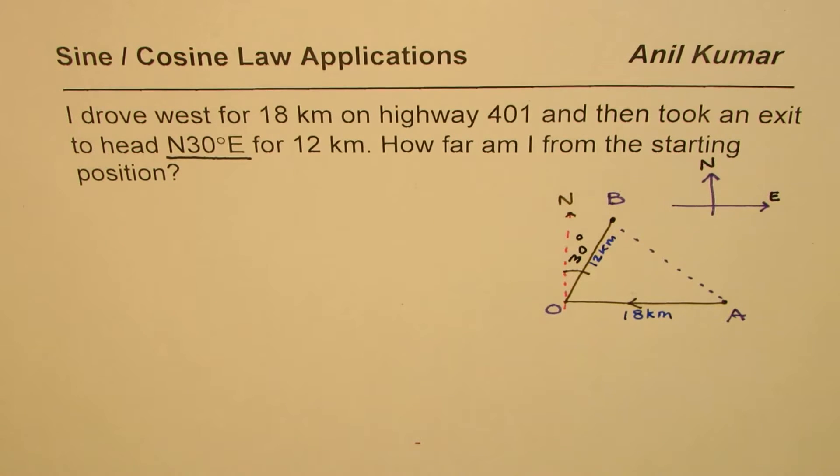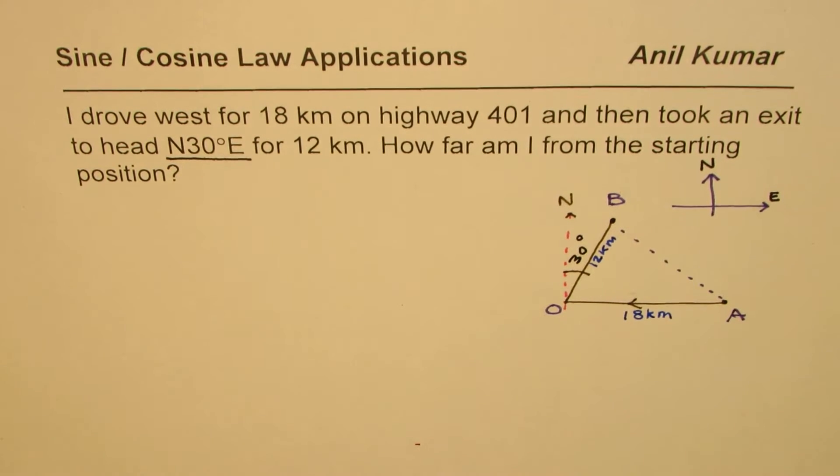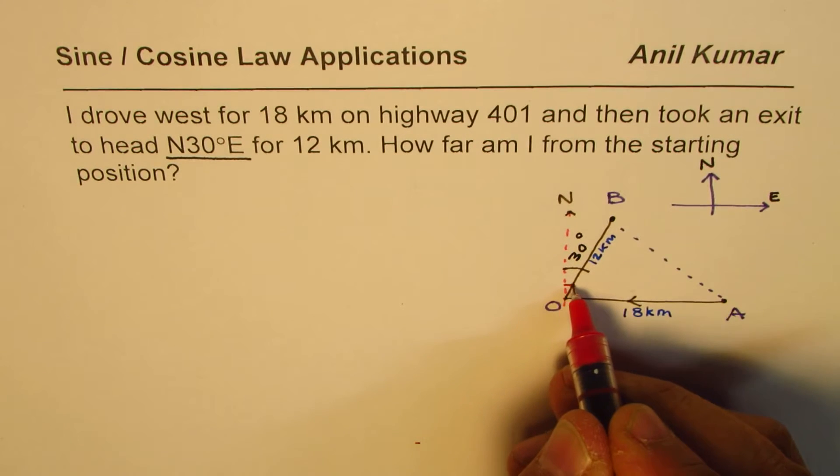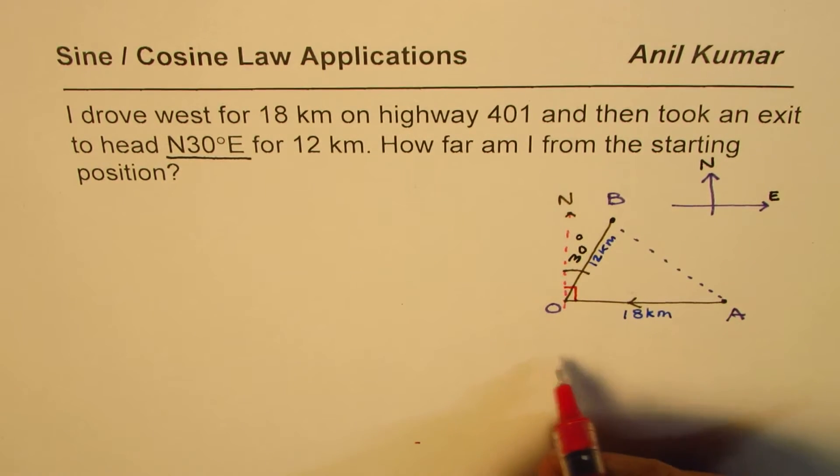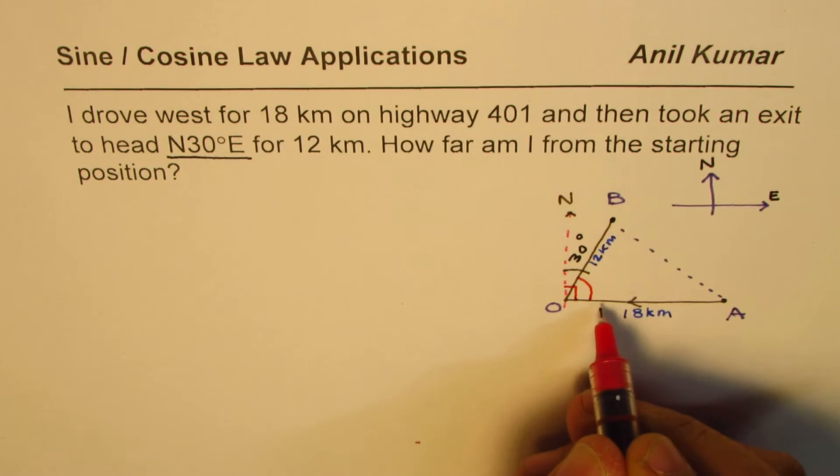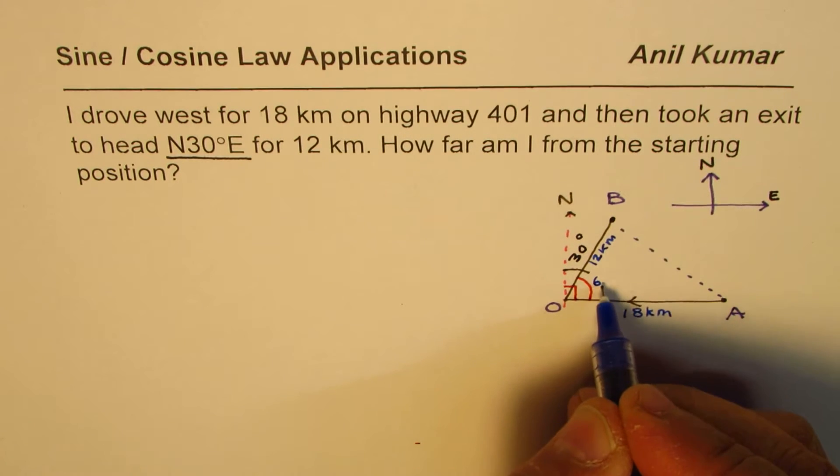Here is my suggestion: since we know that west and north are always at right angles, let us try to find the angle AOB first. This angle is a right angle, therefore...